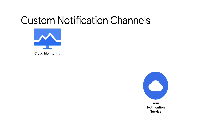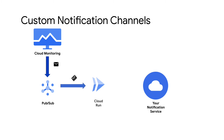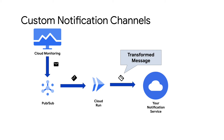Cloud Monitoring generates notifications in JSON using a schema which your notification service may not understand. The simplest way to bridge this gap is to transform the message from Cloud Monitoring to match the schema used by your chosen notification service. At a high level, this process involves adding a new PubSub notification channel and attaching it to your Cloud Monitoring alert. PubSub will then push the message to a Cloud Run service, which transforms the message to match your service's schema and then sends the transformed message to the API of your notification service.